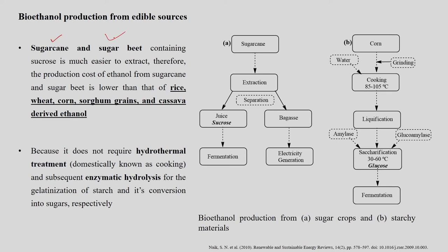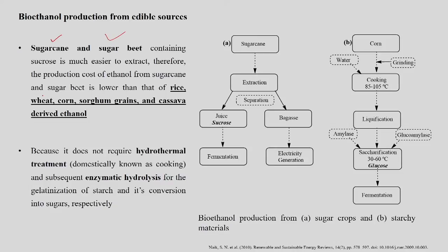Sucrose-containing materials like sugarcane and sugar beet are easier and cheaper to process for ethanol production because they do not require any hydrothermal treatment or enzymatic hydrolysis for gelatinization of starch. As a result, the extracted sucrose can directly be fermented to produce ethanol.